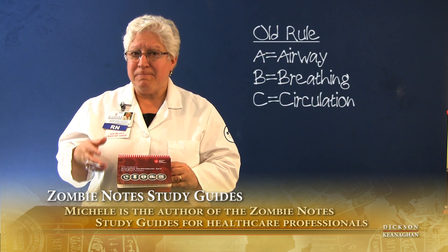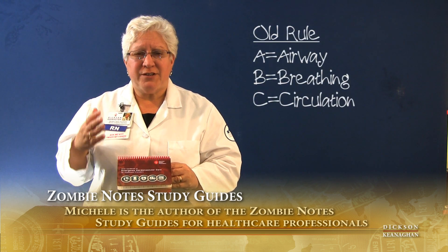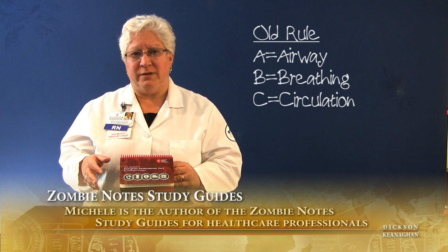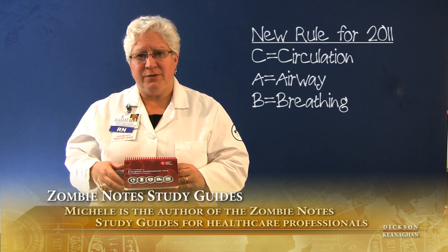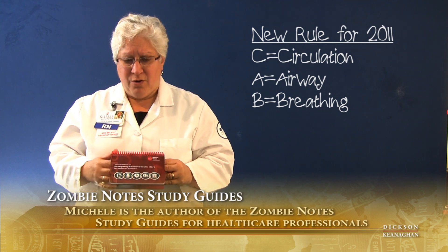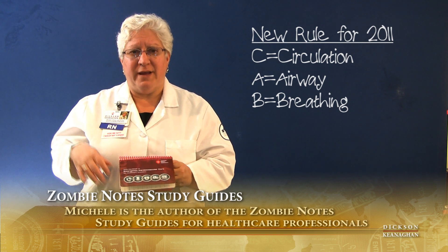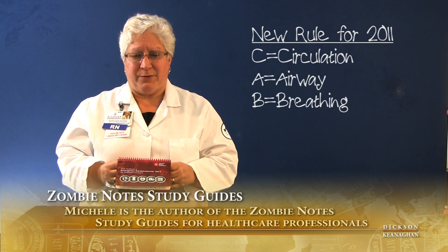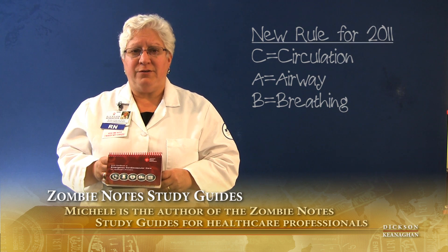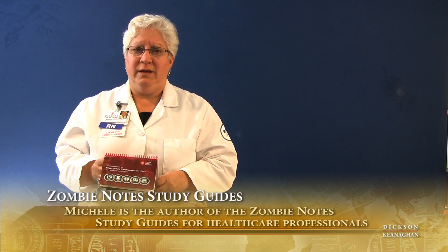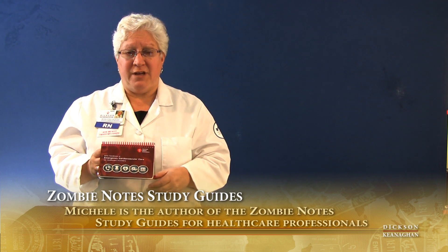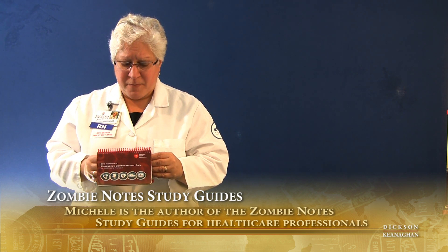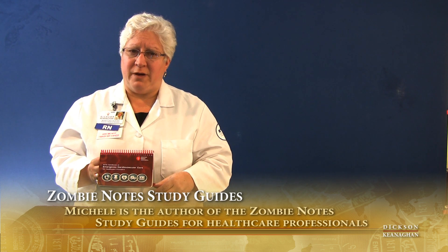We know that adults have ten minutes worth of oxygen in their bloodstream, and instead of ABC, it's now CAB. Circulation is so important that we should do high quality CPR right away. As soon as a team enters the room or EMS arrives, we can start 30-to-2 compressions right away, and outside the hospital, EMS can begin oxygenating and intubating patients.